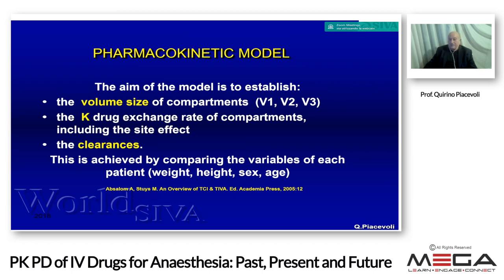Why do we need this pharmacokinetic model? The aim is to establish the volume size of compartments (V1, V2, V3), the key drug exchange rates between compartments including the effect site, and the clearances. This is achieved by comparing patient covariates — weight, age, and sex. It is different to administer anesthesia to a 19-year-old versus an 80-year-old healthy patient.